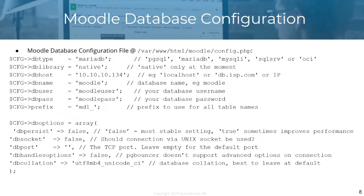There are other database options available — you just need to look in Moodle's GitHub. Other database-related options can allow you to, for example, set a limit on the number of rows fetched into memory when doing a large record set query, or for search indexing in PostgreSQL.